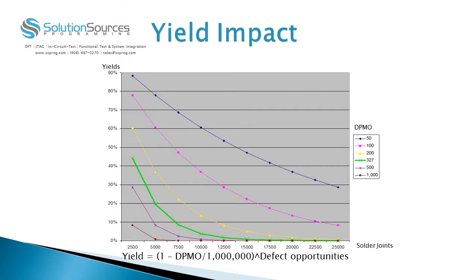The formula used can be seen on the bottom of the slide. This assumes total random defects. In real life, you typically have clusters of defects, so in that case, you typically see slightly higher yields.